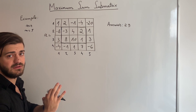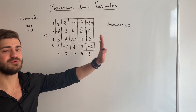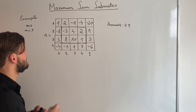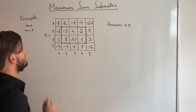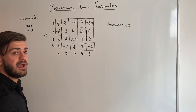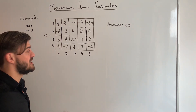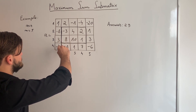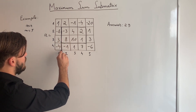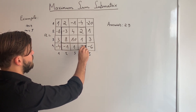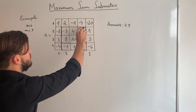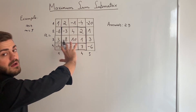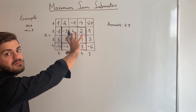In this example, the answer is going to be 29, because after trying all the sum matrices, the rectangle that gives me that sum is actually this one — starting at row 2, column 2 and all the way to row 4 and column 4. So this is my maximum sum submatrix.